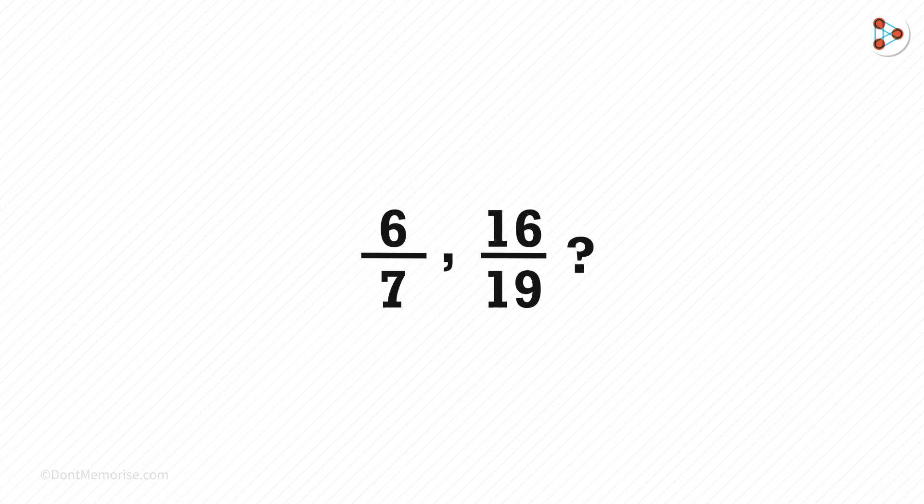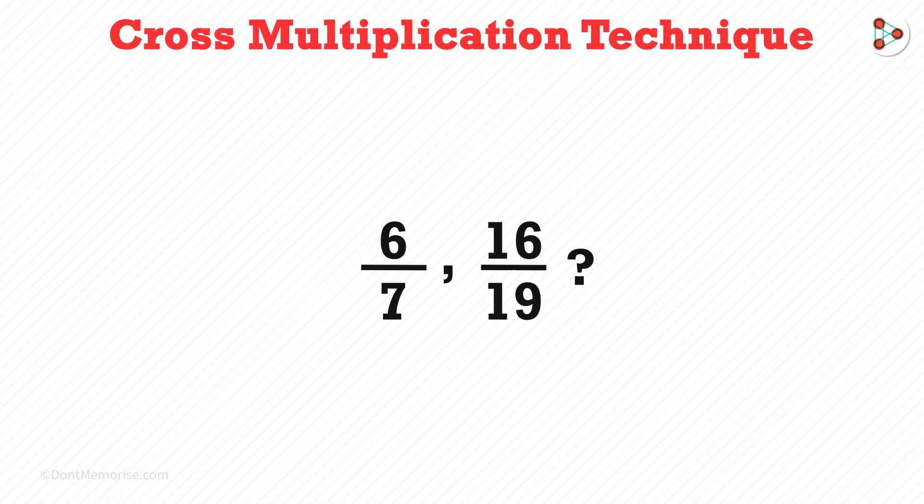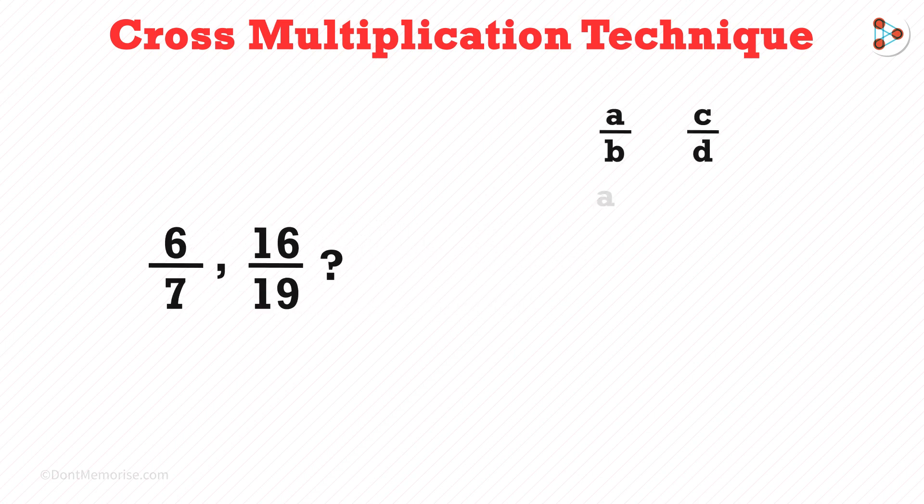So there's a different technique for this which is called the cross multiplication technique. If you need to compare A over B to C over D, then we compare AD and BC.